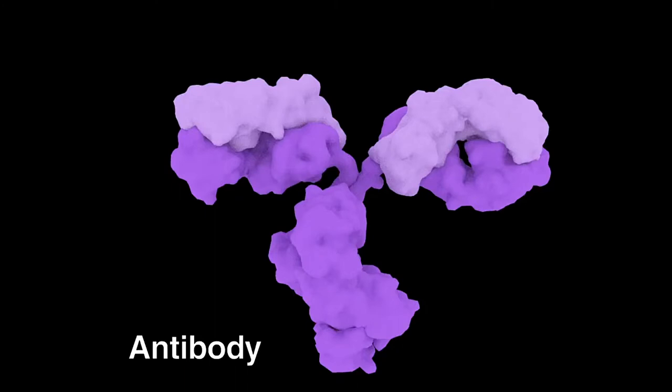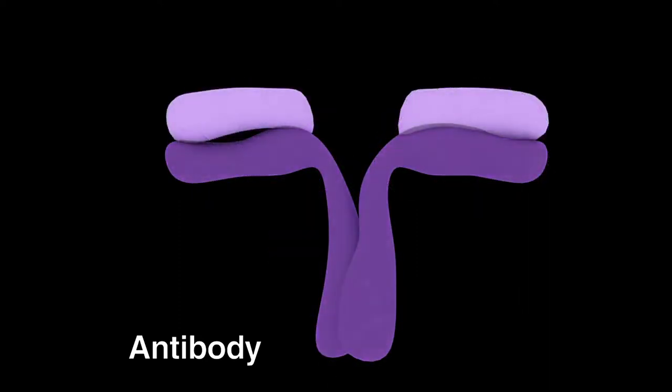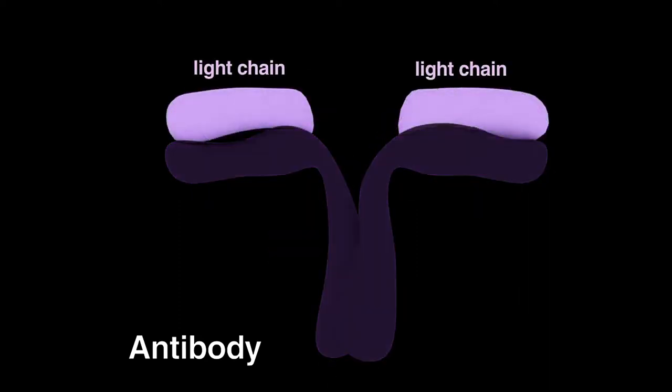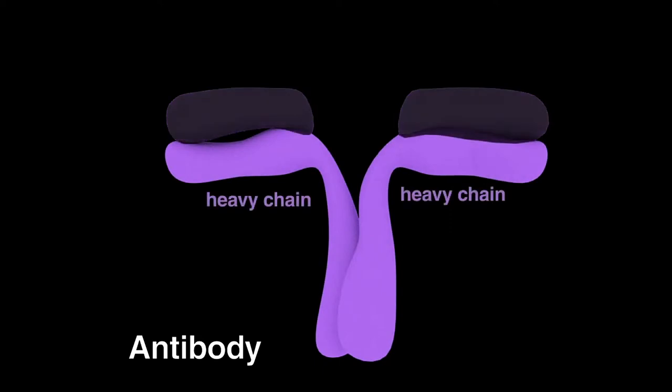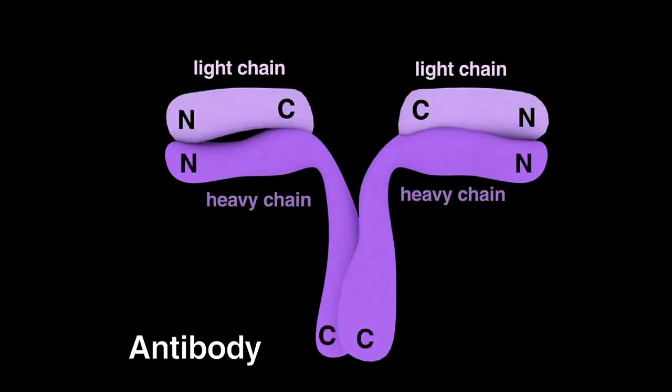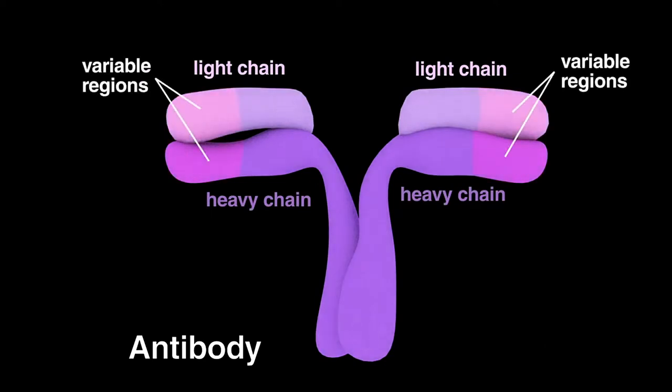Antibodies are Y-shaped proteins and are made up of four polypeptides or protein chains, two identical shorter chains called light chains and two identical longer chains called heavy chains. The N-terminus of the four polypeptide chains vary significantly in sequence from one antibody to the next and are called variable regions.